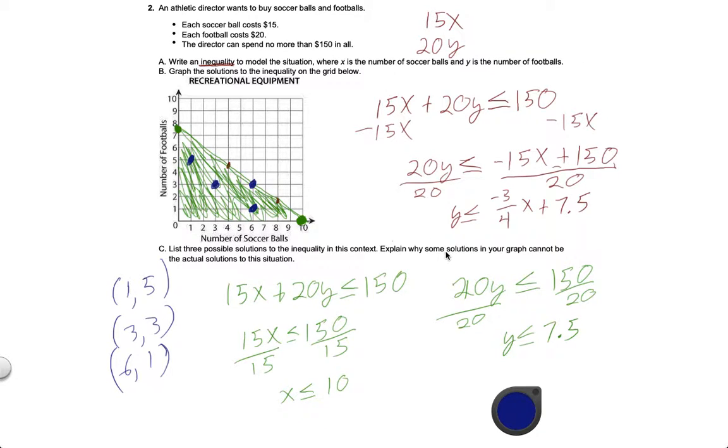The second part, why can some solutions not work. So, let's just say I went right here. I think I'm overloading my computer. So, I'm going to buy four and a half soccer balls and two footballs. You can't buy four and a half soccer balls. I mean, again, you could try, but it's not going to do a lot of good. It would make for a pretty lousy game to have half a soccer ball.